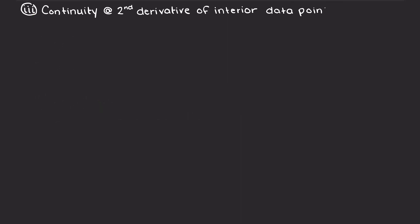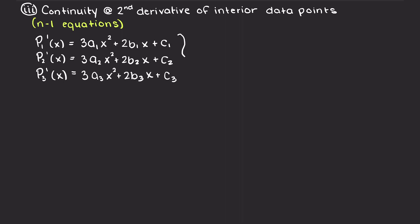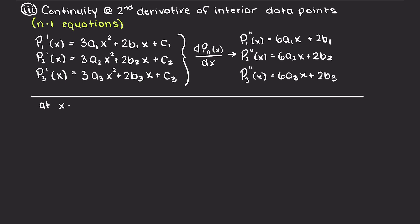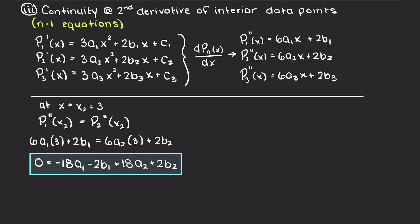Likewise, we can find n-1 equations from doing the same thing with our second derivatives. As in cubic spline interpolation, we have smoothness at both the first and second derivatives. Then we are going to equate them and plug in our x values just like we did earlier, and here it is x equals 3. This works out to the following equation and I am just going to rearrange it such that all variables are on one side and the constant on the other side of the equation.